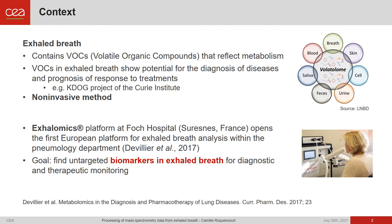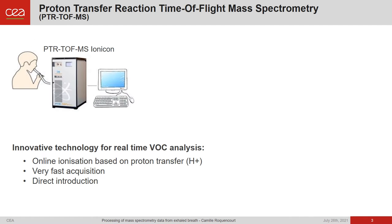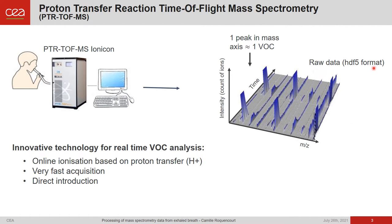Their goal is the untargeted search of biomarkers in exhaled breath for diagnosis and therapeutic monitoring. To do so, they acquired a proton transfer time-of-flight mass spectrometer. The principal benefits of this instrument are online ionization based on proton transfer, very fast acquisition, and direct introduction. The patient blows directly into the instrument and data are acquired in real time in HGA5 format, containing a matrix with three dimensions: the intensities in count of ions, the mass dimension where a peak arises around the m/z value of the detected molecule, and the time dimension, which permits analysis of the variability of the molecule depending on acquisition time.